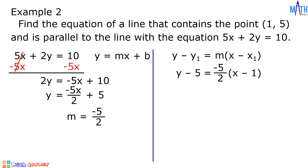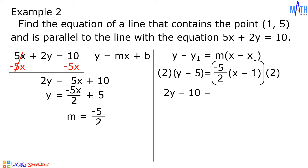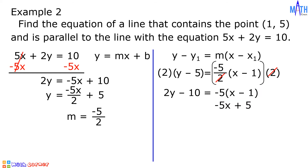Since -5/2 is a fraction, let us multiply both sides by 2. 2 times (y - 5) equals 2y - 10. On the right side, 2 times (-5/2) times (x - 1): the 2s cancel out and we are left with -5 times (x - 1). Since -5 × (x - 1) = -5x + 5, then we have 2y - 10 = -5x + 5.